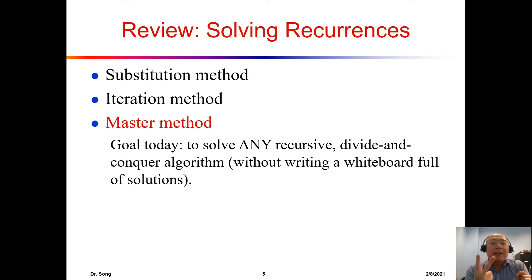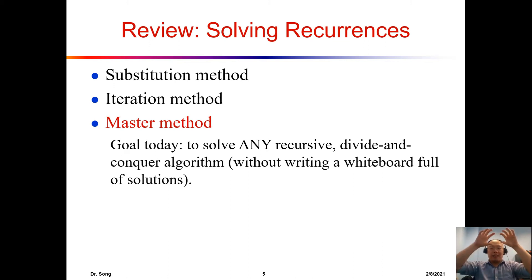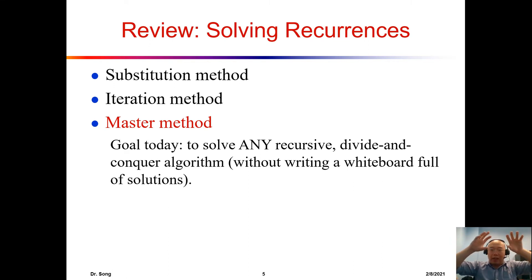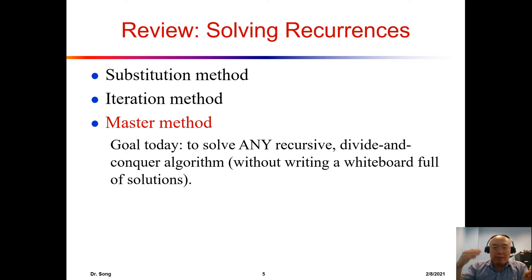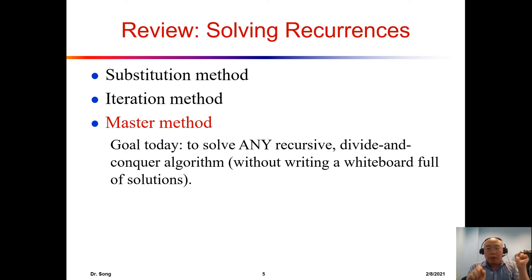Remember, there are two mindsets of doing recursion. Number one is divide and conquer: to solve T(n), you break it into subproblems like T(n/2) — dividing one big problem into two, three, or four parts. Number two I call 'getting one step closer': you handle one item and need to solve T(n−1). Every time you get one step closer to the final goal, but only one item at a time.